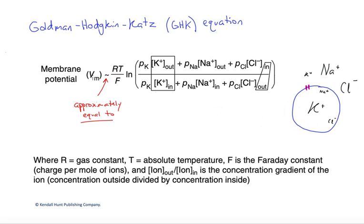VM is approximately equal to a couple of constants, a gas constant over the Faraday constant, and we've got our absolute temperature in there. All of those are going to be fairly constant in a physiological setting, especially in homeotherms that tend to maintain a fairly consistent body temperature.